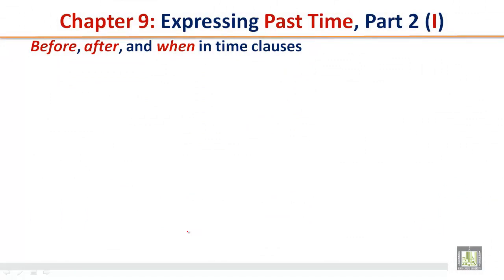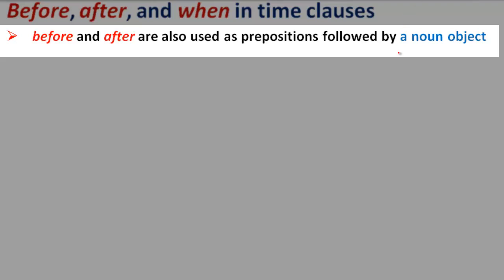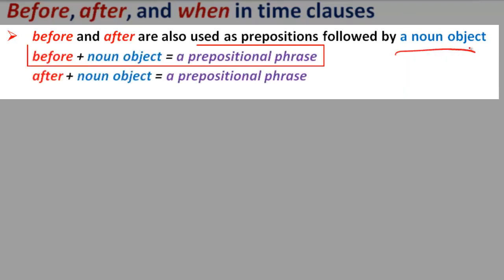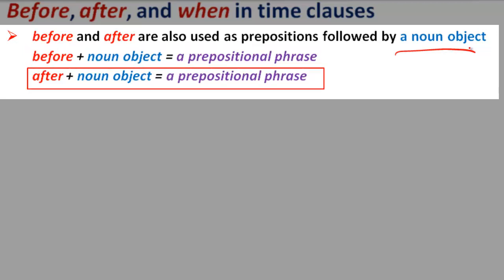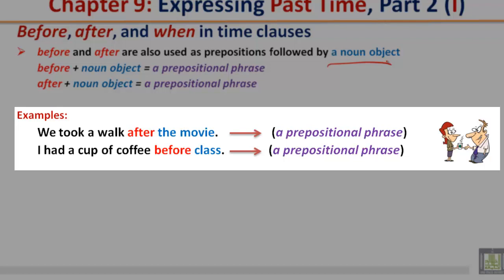Before, after, and when in time clauses. Before and after are also used as prepositions, followed by a noun object. Before plus noun object equals a prepositional phrase. After plus noun object equals a prepositional phrase. We took a walk after the movie, a prepositional phrase.